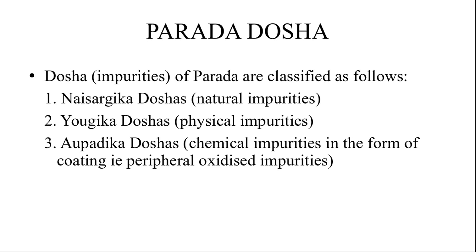Now we can consider the Parada doshas. There are three types of doshas present in Parada. That is naisargika doshas — naisargika means natural impurities. Then yaugika doshas — physical impurities added by vendors to increase the weight of mercury. Then avapathika doshas, also known as kanchuka doshas — these are chemical impurities in the form of a coating over mercury, that is peripheral oxidized impurities.